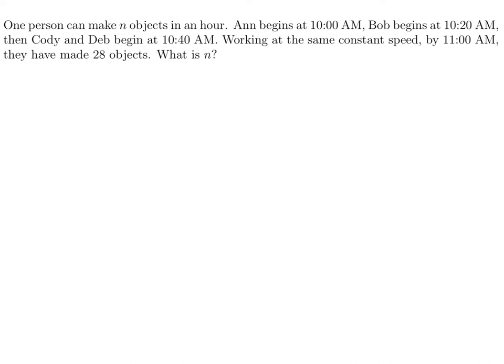One person can make n objects in an hour. Ann begins at 10 a.m., Bob begins at 10:20, and then Cody and Deb begin at 10:40 a.m. Working at the same constant speed by 11 a.m., they have made 28 objects. What is n? So Ann is working from 10 to 11, an hour. She would make n objects.